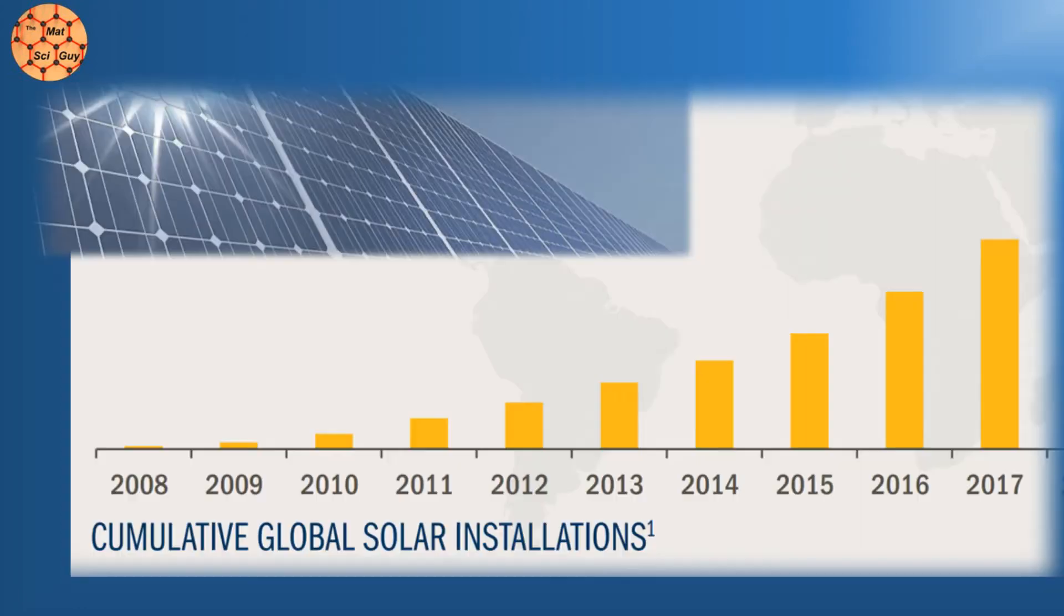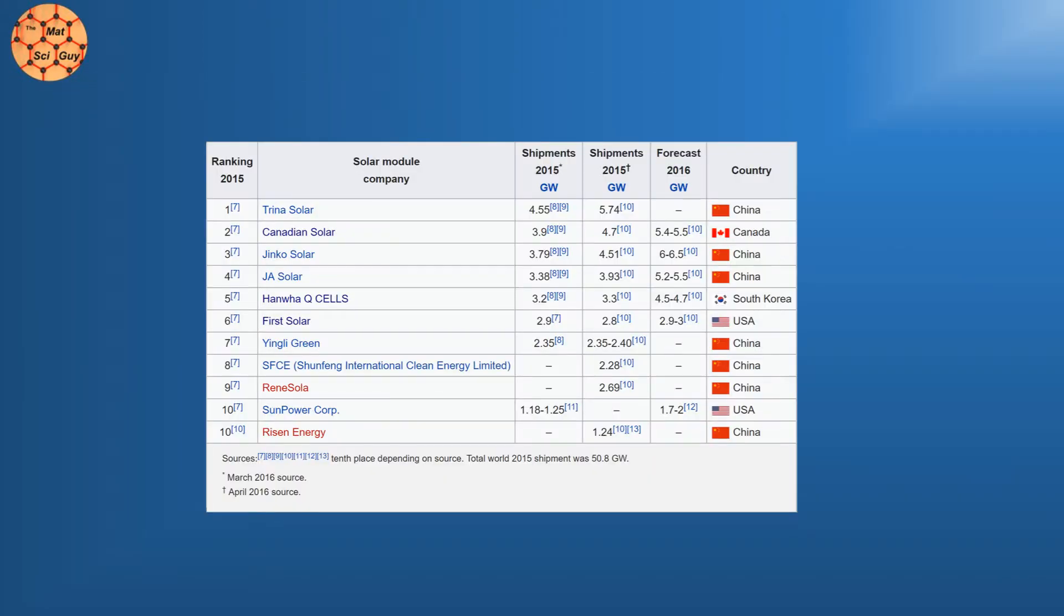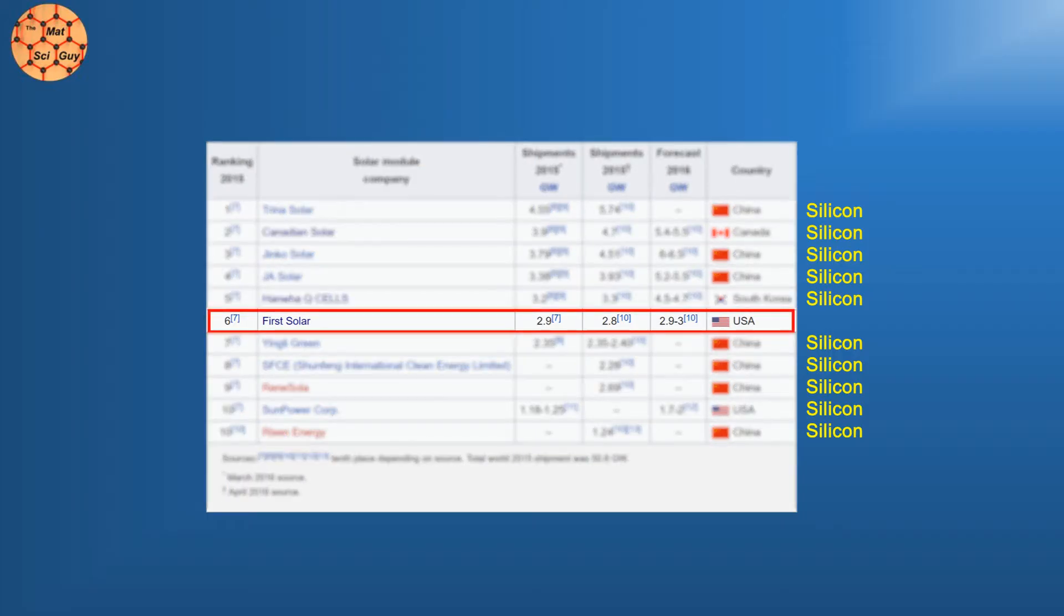The solar industry has been booming in recent years, and if you believe the forecasts, the coming years will be even bigger. If you look at the largest solar manufacturers in the world, virtually all of them use silicon as their active layer material, either single crystal or polycrystalline. But one company decided to go a completely different route. This is the story of cadmium telluride.